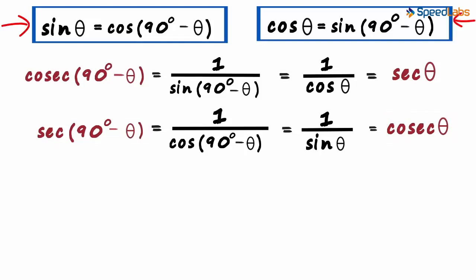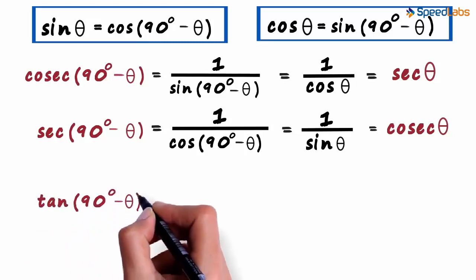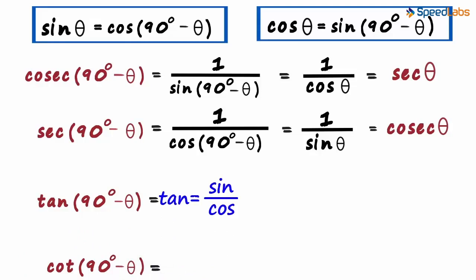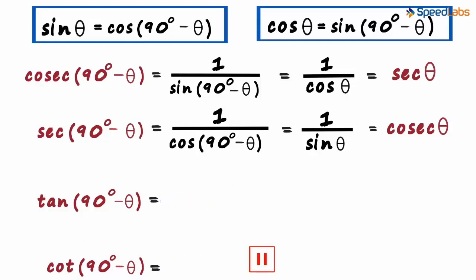With the help of these two relations, we could derive two more relations. Now why don't you try deriving two more relations — they are extremely simple to derive. Try deriving a similar relation for tan(90° - θ) and cot(90° - θ). Let me give you a hint: tan is sine by cos and cot is cos by sine. Now try deriving the relation.